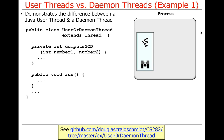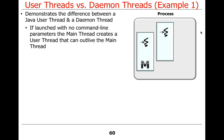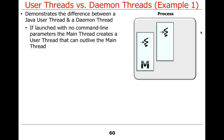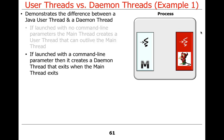Let's take a look at an example — I'll bring up an editor to show this. This is a simple example located in the user-daemon-thread directory. It computes the GCD of two numbers. If you launch it with no command line parameters, the main thread creates a user thread that can outlive the main thread. If you run it with a command line parameter, it creates a daemon thread that exits when the main thread exits.